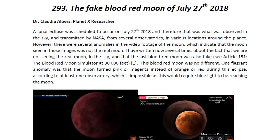A lunar eclipse was apparently scheduled to occur on July 27, 2018, and therefore that was what was observed in the sky and transmitted by NASA from several observatories in various locations around the planet. However, there were several anomalies in the video footage of the moon which indicate that the moon seen in those images was not the real moon. I have written several times about the fact that we are not seeing the real moon in the sky and that the last blood red moon was also fake. This blood red moon was no different.